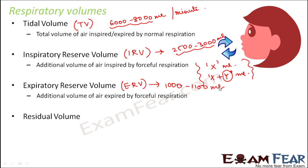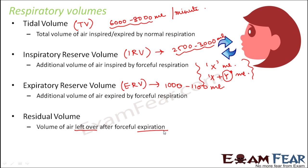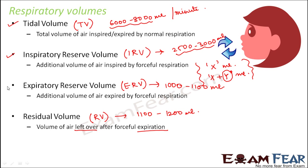What is residual volume? The term residue means something which is left over at the end. So residual volume is the volume of air which is left over after forceful expiration. Even if you do a forceful expiration and try to give out as much air as possible, some amount of air is still left over in your lungs. That leftover volume of air is known as residual volume, abbreviated as RV. It has been found to be 1100 to 1200 milliliters.